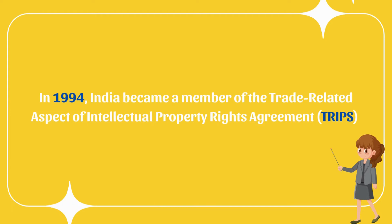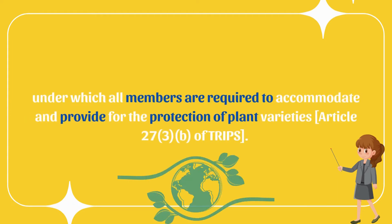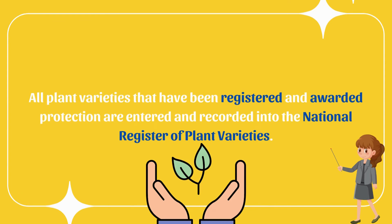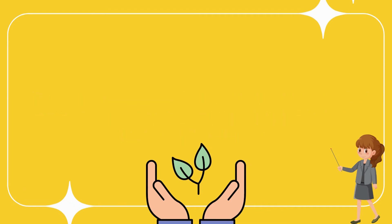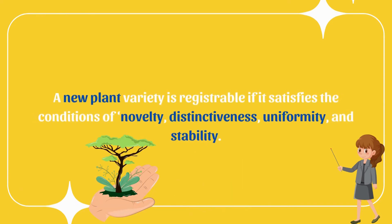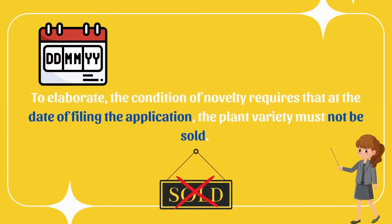In 1994, India became a member of the TRIPS Agreement, under which all members are required to accommodate and provide for the protection of plant varieties. All plant varieties that have been registered are entered into the National Register of Plant Varieties. The Plant Varieties Act permits any breeder, farmer, and any authorized person to apply for registration of a new plant variety.